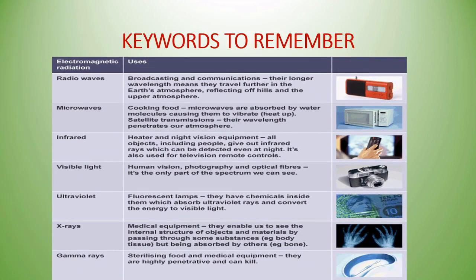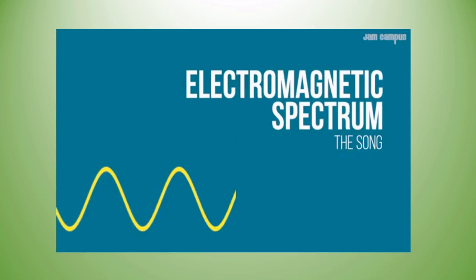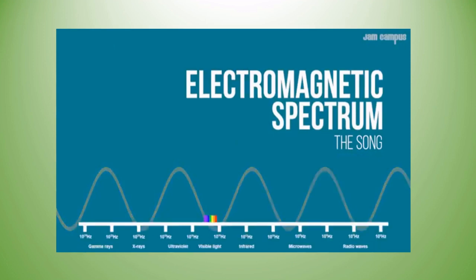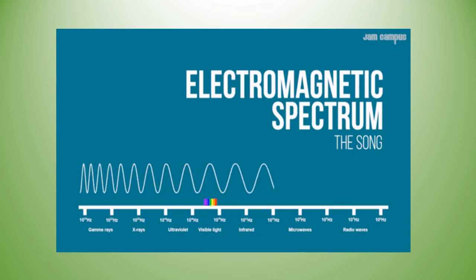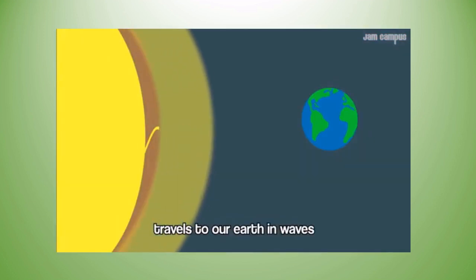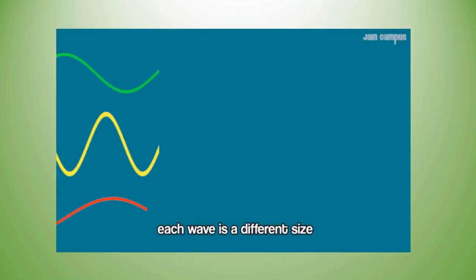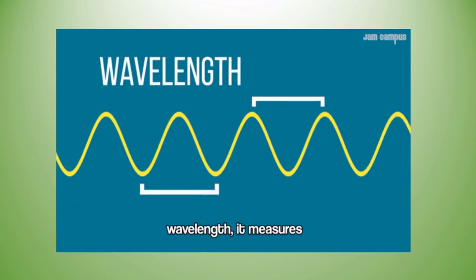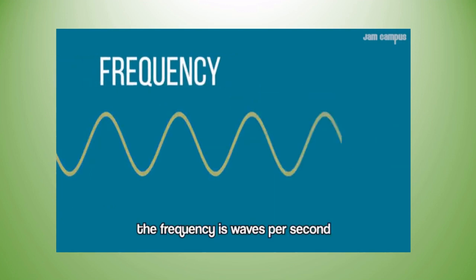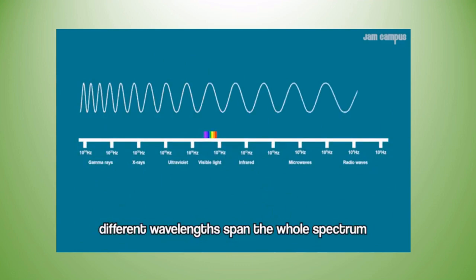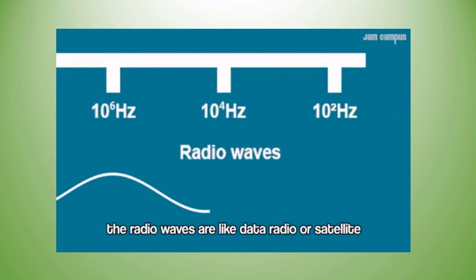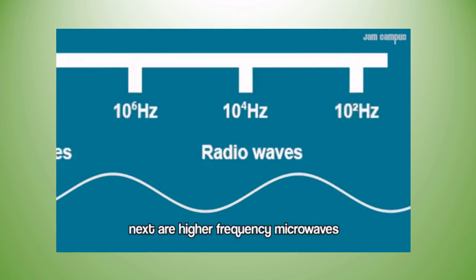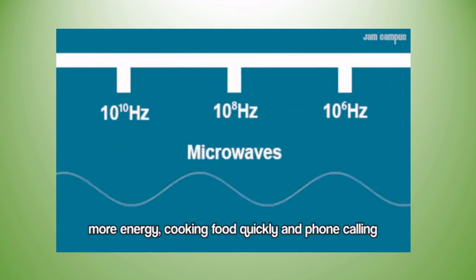Electromagnetic radiations and their uses. Now let us see about the electromagnetic song. Energy travels to our Earth in waves — each wave is a different size. Wavelength is the length of a wave in meters; frequency measures waves per second. Different wavelengths span the whole spectrum. The longest of all the waves are radio waves, used for data, radio, and satellite. Next with higher frequency are microwaves with more energy, used for cooking food and phone calls.